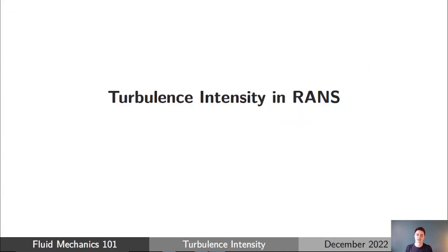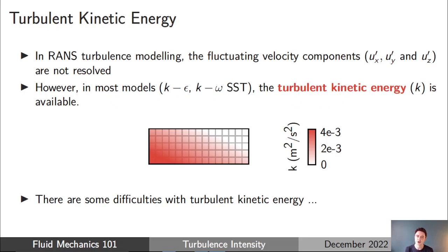So how is turbulence intensity defined, used, and interpreted in RANS CFD? When using a RANS CFD model — k-epsilon, k-omega, SST — we're not calculating or resolving the fluctuating velocity component. All we have in most cases is the turbulent kinetic energy, k. This gives us some representation of what the velocity fluctuations are likely to be if we were to resolve the turbulent flow field in LES or DNS, but there are difficulties with interpreting turbulent kinetic energy directly.